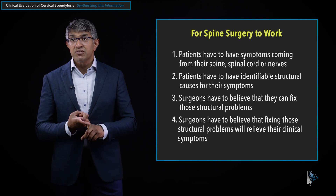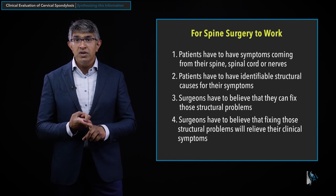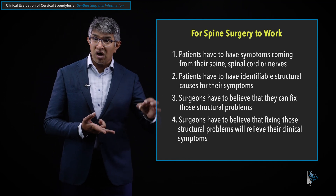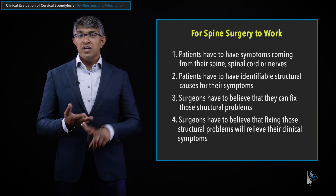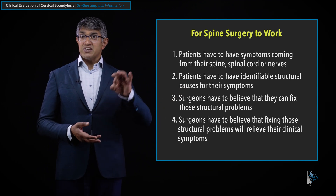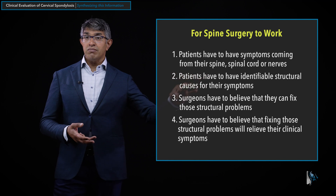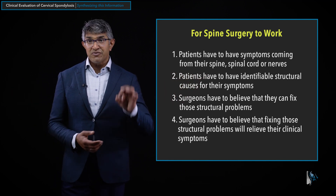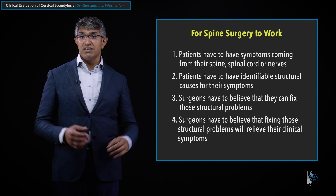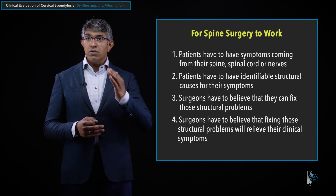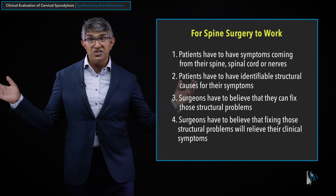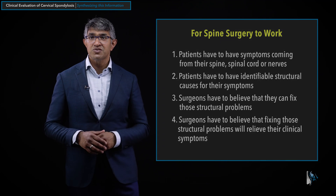To reiterate: patients have to have problems coming from their spine; they need an identifiable structural cause for those symptoms; the surgeon has to believe they can fix that structural problem; and you have to believe that fixing it will give people symptomatic relief. Those are four important rules for making sure surgery is going to work, or at least increasing its chances of working.